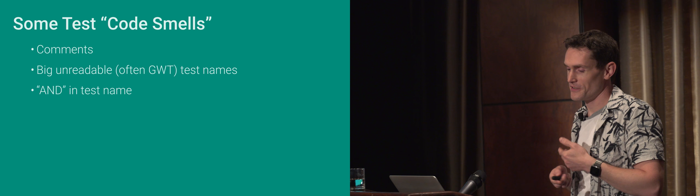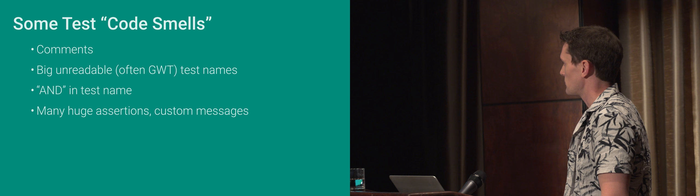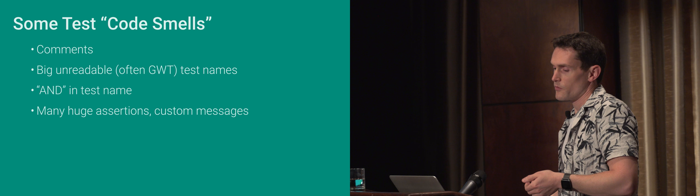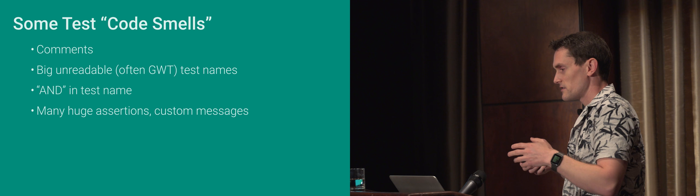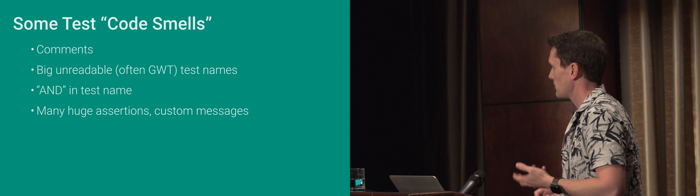If we get these big unreadable test names, I can't easily parse that — it's slowing down the amount of time it's going to take me to figure out what's going on when a test fails. If we see 'and' in a test name, that's got to be one of the worst — you see this a lot. If you see 'and' in a test name, that's a big red flag. You get a huge block of assertions — if you see a lot of assertions in a test, that's a bad sign. It's probably testing too much, and even if it's not and it's just trying to test lots of facets of the same thing, then maybe it can be expressed in a more clean way. Likewise, if there are custom messages there, they're going to get in the way of you actually parsing the test when you're trying to make sense of it.